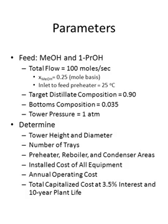We're going to use an example where we separate a feed containing methanol and normal propanol. The total feed flow to the distillation column is 100 moles per second. The concentration of methanol in the feed is a 0.25 mole fraction, and the feed to the preheater is 25 degrees Celsius. Our target distillate composition will be a 0.90 mole fraction of methanol, the bottoms target is 0.035 mole fraction of methanol, and this tower is running at one atmosphere pressure.